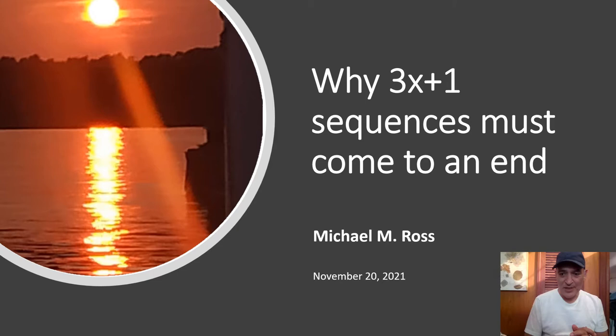Hi. I'm going to predict that the sun is going to set on the Collatz conjecture sooner rather than later, but maybe not soon enough. And the essence of the reason for this is 3x+1 sequences must come to an end, just like the conjecture.